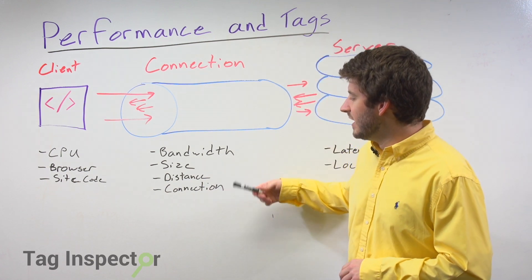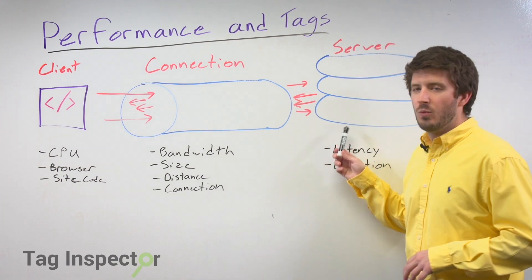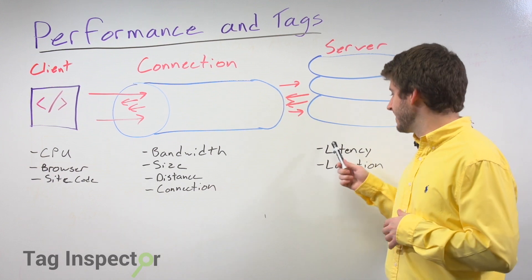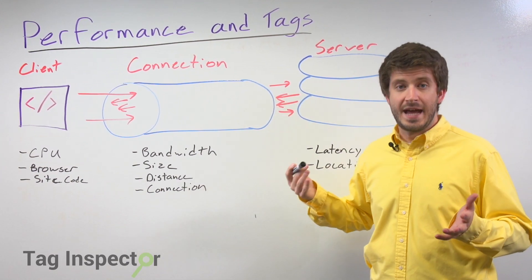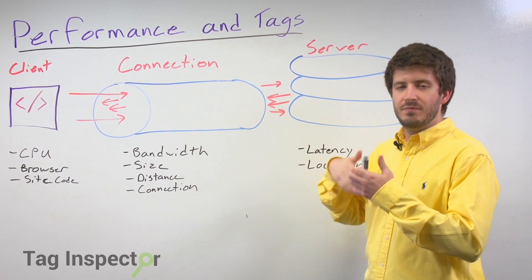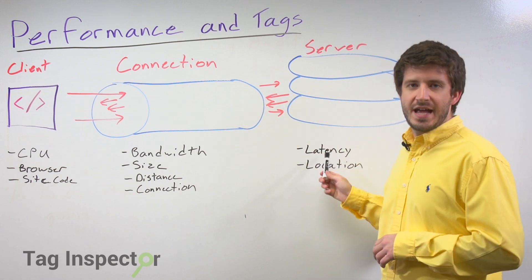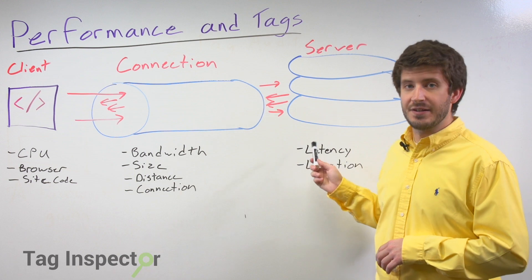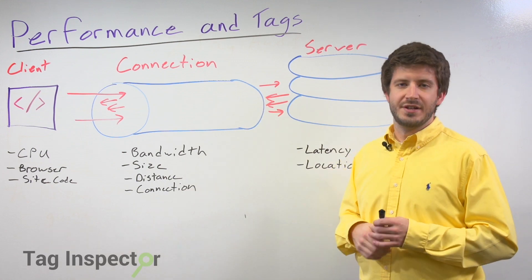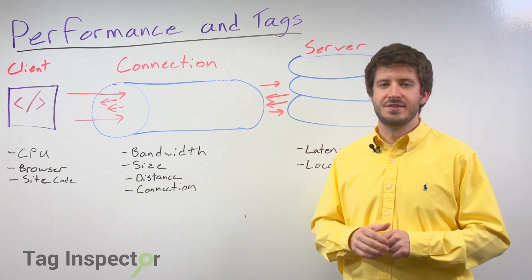I also want to take into account distance as well as connection, which comes in more when we're talking about the server side — what the tag end of things looks like. The main things on the server or tag end are latency: when it sends up a request for the server to process that information and send back a response, how long does that take? Location is also going to directly affect that latency, because the further a request has to go, the longer it's going to take. It might only be milliseconds, but those milliseconds matter when you're talking about hundreds and thousands of total requests happening on your website.